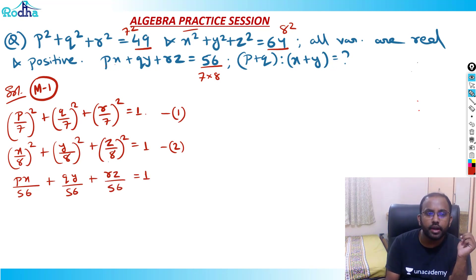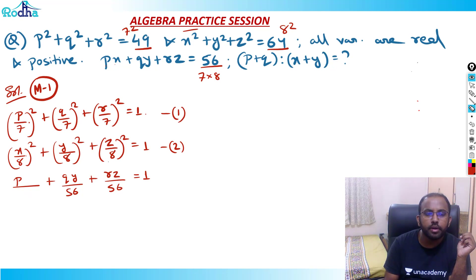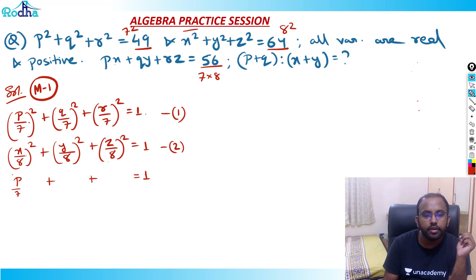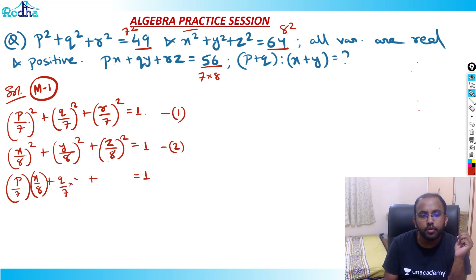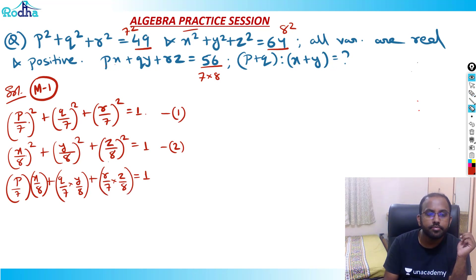Basically what I want is this multiplication: P/7 × X/8 = PX/56. So I can write equation 3 directly as (P/7)(X/8) + (Q/7)(Y/8) + (R/7)(Z/8) = 1.